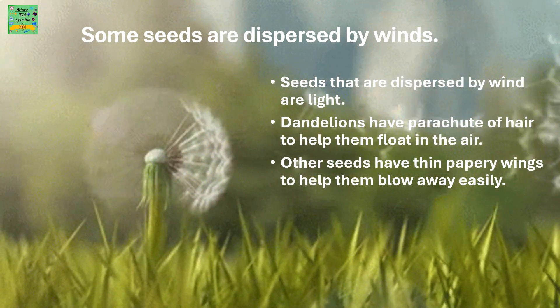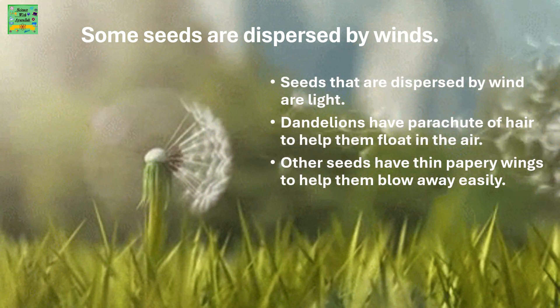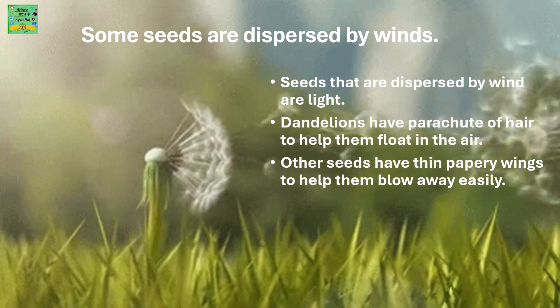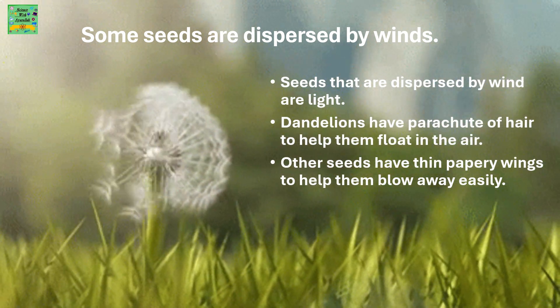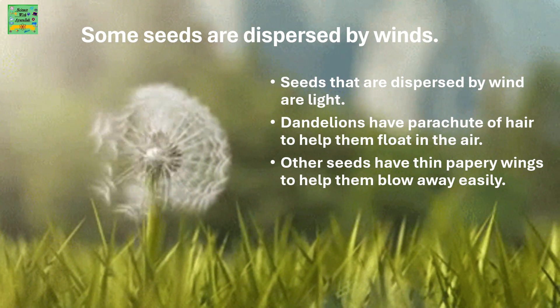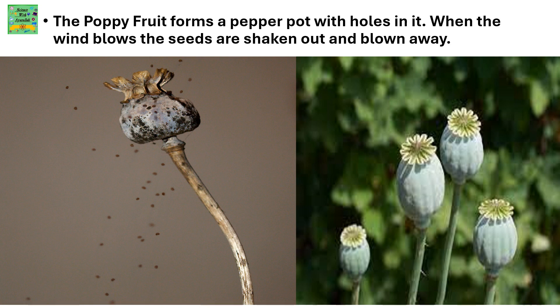Some seeds are dispersed by wind. Seeds that are dispersed by wind are lightweight. Dandelions have a parachute of hair to help them float in the air. Other seeds have thin papery wings to help them blow away easily. The poppy fruit forms a pepper pot with holes in it; when the wind blows, the seeds are shaken out and blown away.